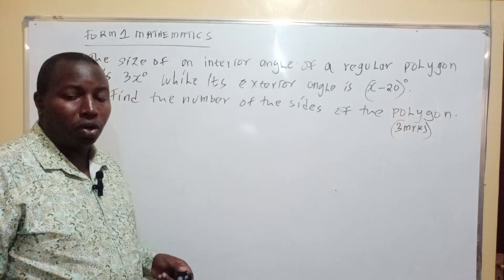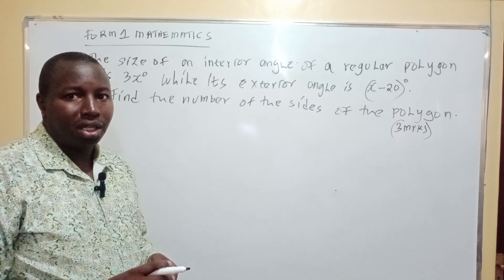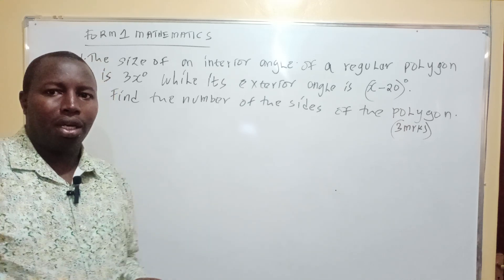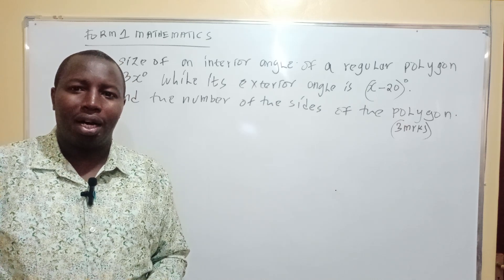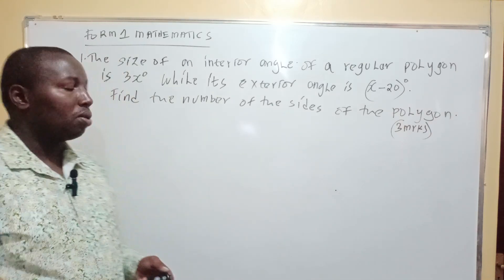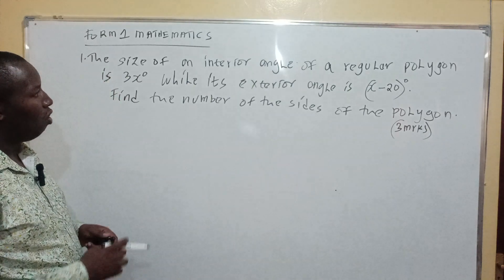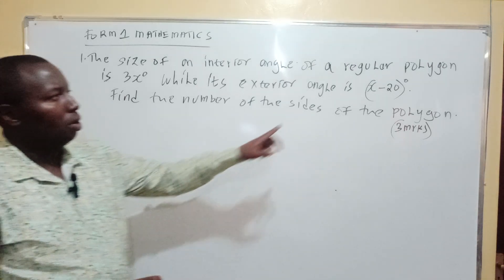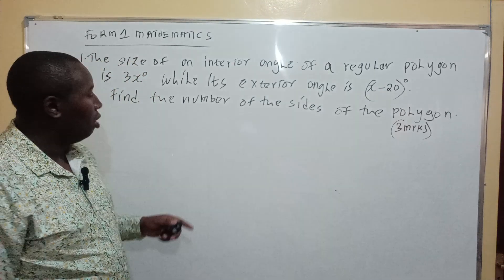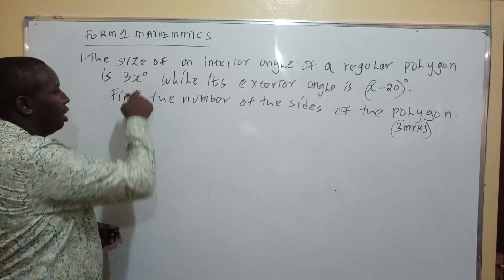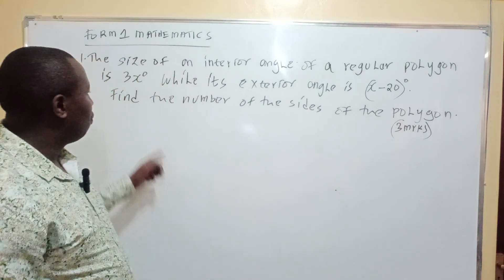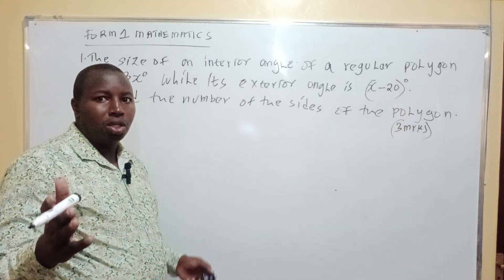We are going to cover the question on the sum of the interior angles. So I want us to learn about the concept when we are dealing with the exterior and the interior angles of a regular polygon. The question on the board is: the size of an interior angle of a regular polygon — a regular polygon is a polygon whose all sides are equal — the interior angle is 3x, while its exterior angle is x minus 20 degrees. Find the number of sides of the polygon.